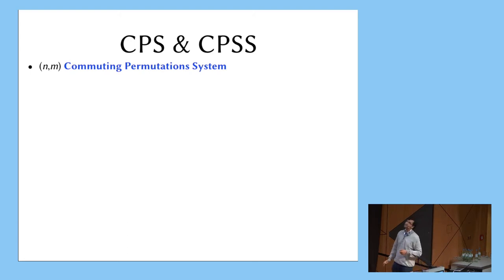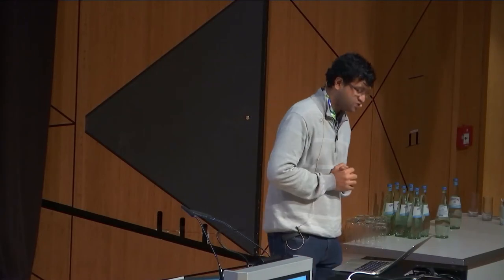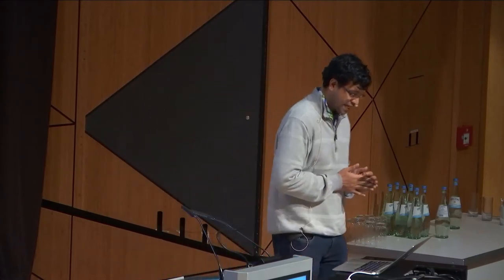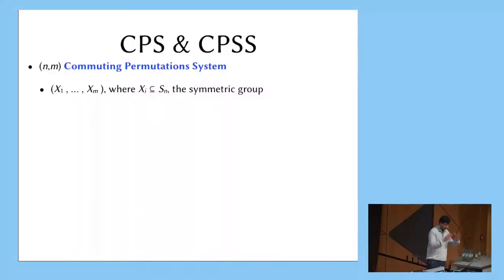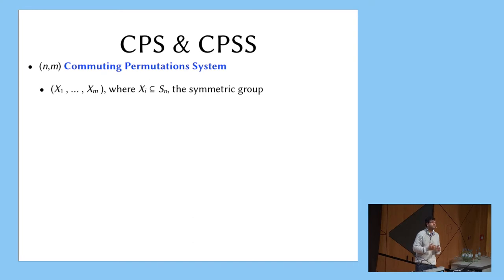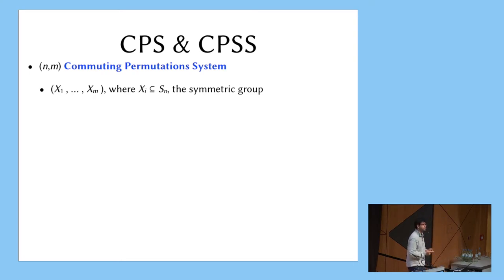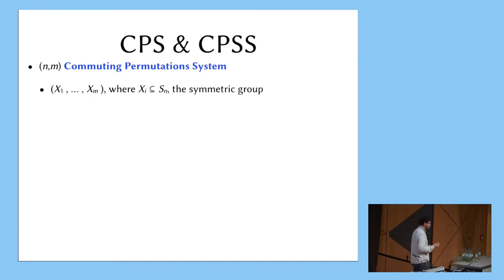These are names we came up with — they're very natural objects. What is an N-CPS? CPS stands for a commuting permutations system. Think of N as the size of the output alphabet — 1 to N are the possible outputs of some function. Each of X1 to XM are the input sets of M players. Each input is actually just a permutation of these N numbers, so each element in Xi is a permutation on N elements. Xi is a subset of the symmetric group SN.